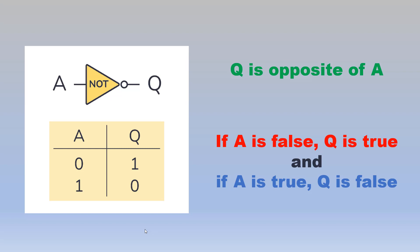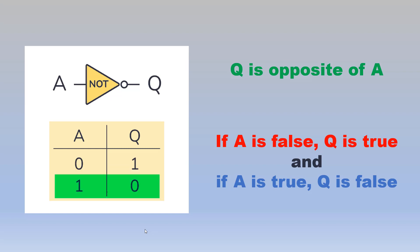Let us talk about the third basic logic gate, the NOT gate. The NOT gate has a single input and a single output. The output of the NOT gate is the complement of the input, meaning if A is 0 then the output is 1, and if A is 1 then the output is 0. So this is a brief description of the three basic logic gates.